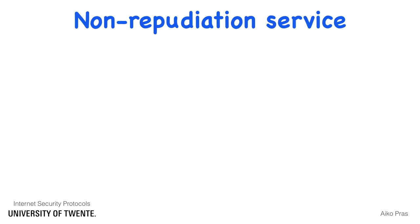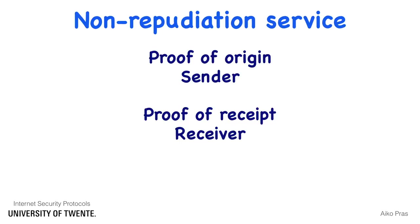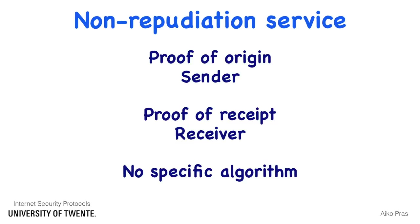Non-repudiation is a security service that protects against false denial of involvement in an association. Two forms should be distinguished. The first is non-repudiation with proof of origin, which protects against senders that deny that they have sent a certain message. The second is non-repudiation with proof of receipt, which protects against receivers that deny that they have received a certain message. For non-repudiation, there are no specific algorithms, since it can be achieved as a side effect of encryption mechanisms, as private keys should only be known to the sender.